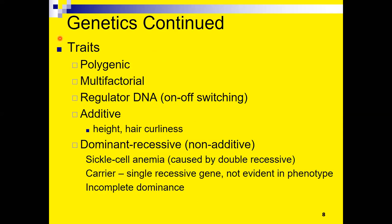Let's look at various types of genetic traits. Some genetic traits are polygenic — the word 'poly' means many and 'genic' refers to genes, so these are traits where more than one gene is involved in producing that trait. Many things fit this category: people's height, personality, intelligence, and lots of other characteristics.